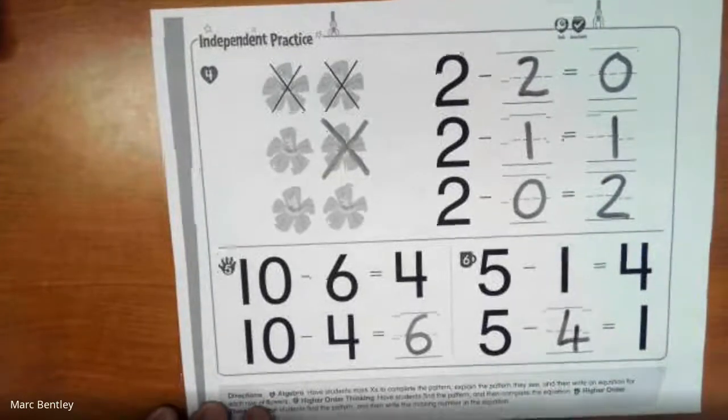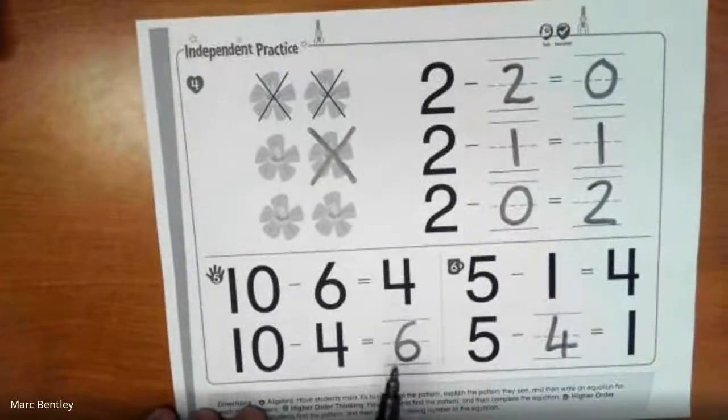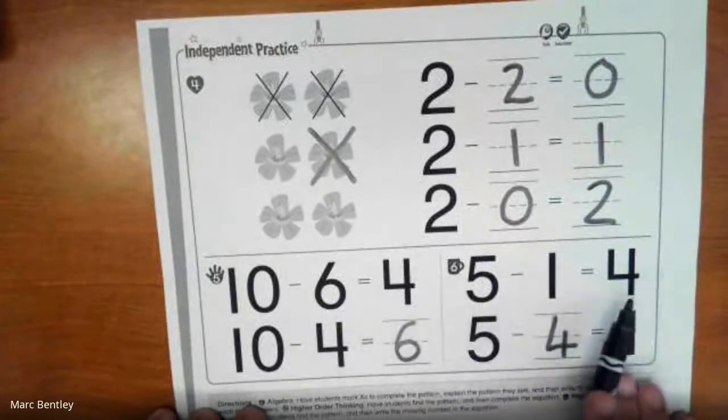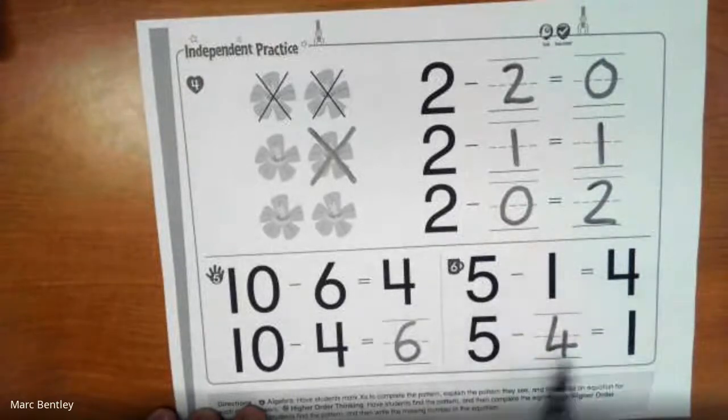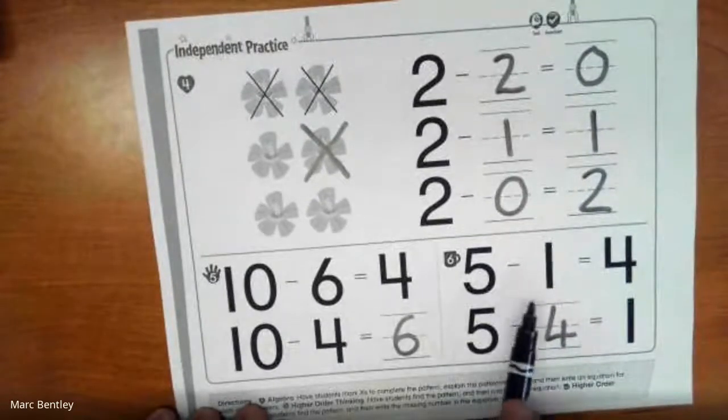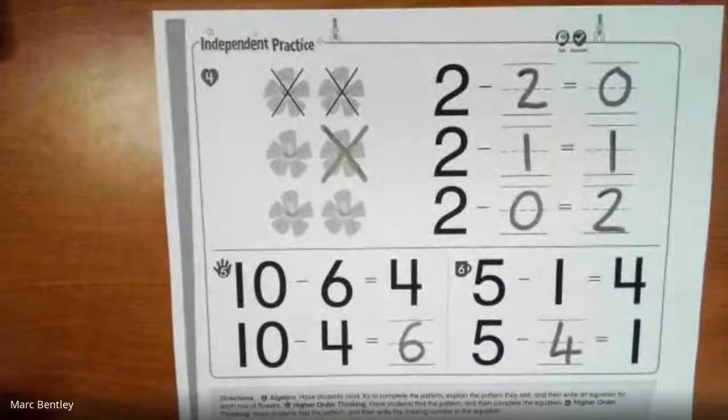And we don't even have to work out each individual problem. We can just tell from the relationship between this equation and this equation that we come to the same answer. 5 minus 1 equals 4. So that means that 5 minus 4 must equal 1.